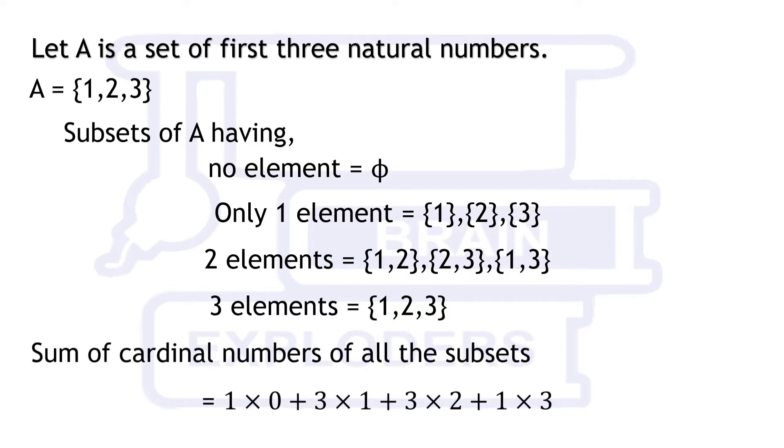Here we have 1 subset having 0 element, 3 subsets having 1 element, 3 subsets having 2 elements and 1 subset having 3 elements. On adding all these we get 12.